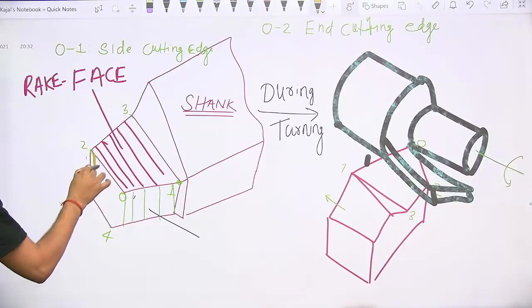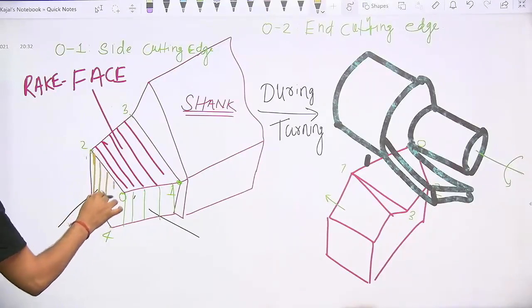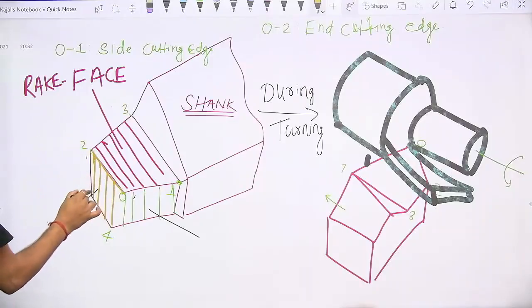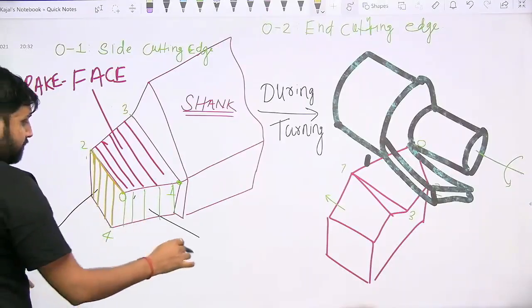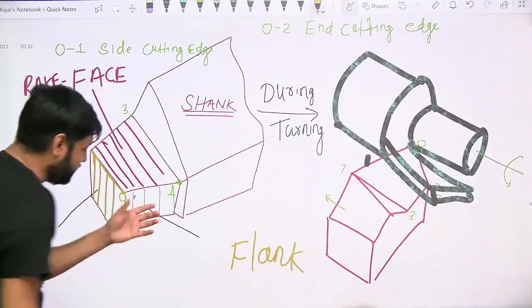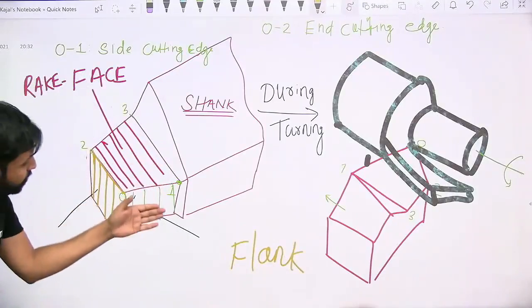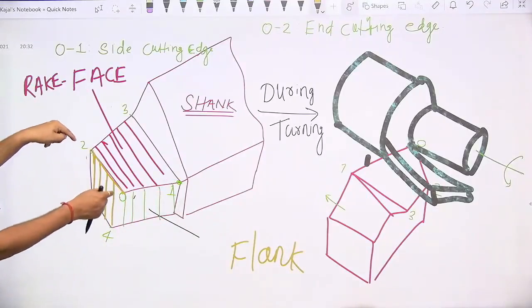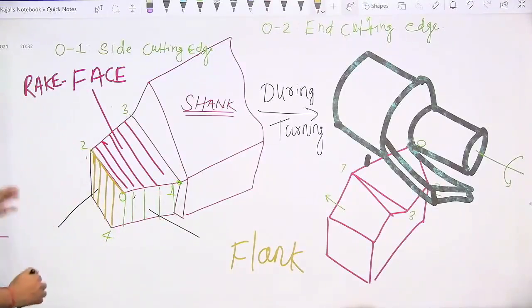Both these surfaces are termed as flank surfaces. The surface which is just below 01 cutting edge, that is side cutting edge, is also one flank surface. The surface which is below 02 cutting edge, that is end cutting edge, is also called flank surface.